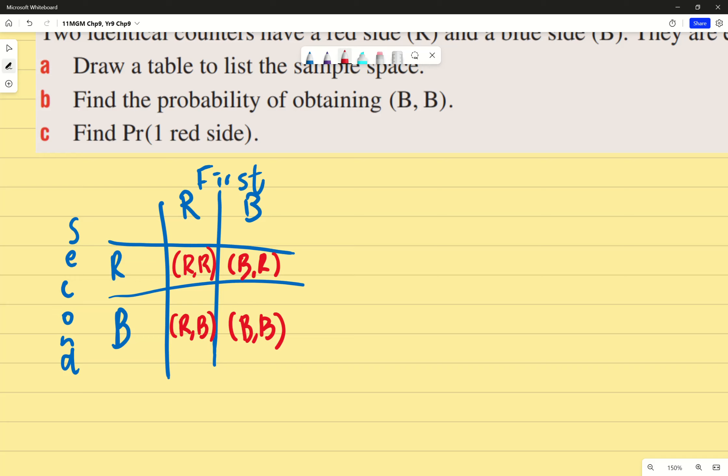Now, let's just find the probability of obtaining blue and blue. If you had done this incorrectly and thought the blue and red and the red and blue were the same, you would say blue, blue is one out of three outcomes, therefore one third, which would be wrong. Because there are four outcomes, not three. So the probability of BB equals one out of four, because it's one out of four outcomes.